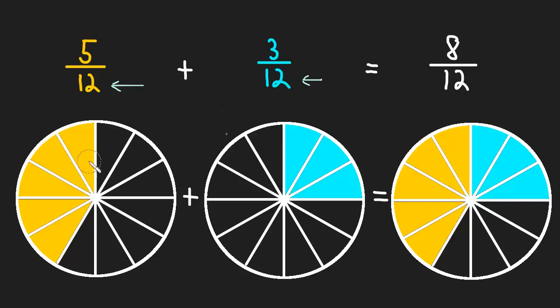So we had twelve pieces, five out of twelve, and three out of twelve. So in other words, we were cutting our whole into twelve pieces each time. So every piece is the same size, so we can add them up no problem.